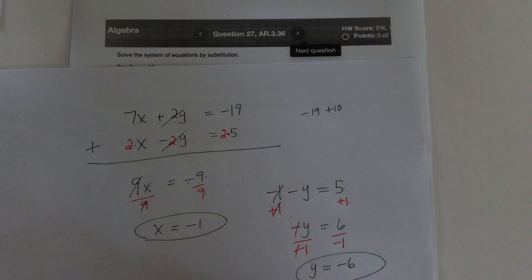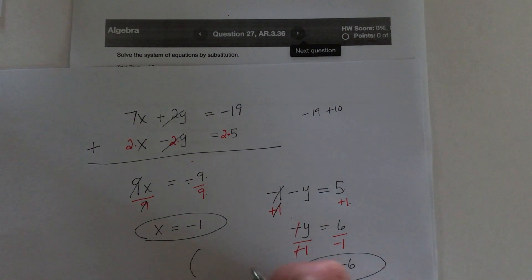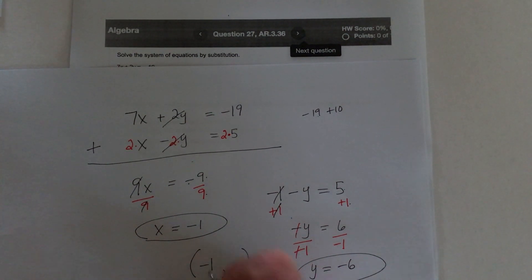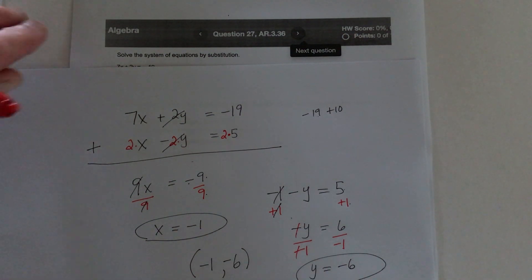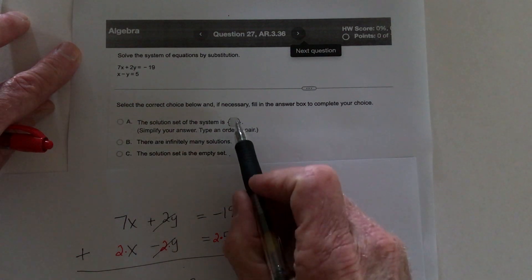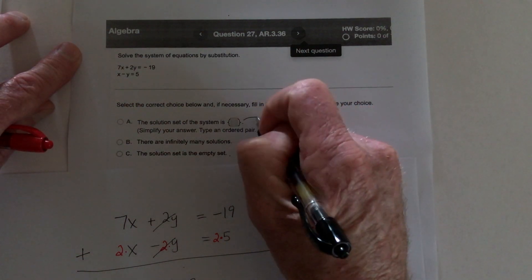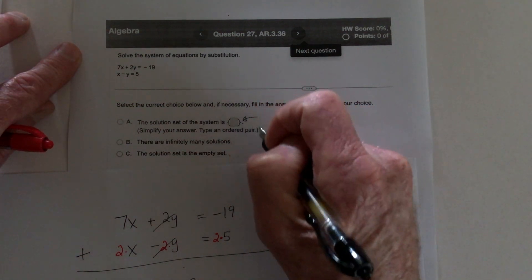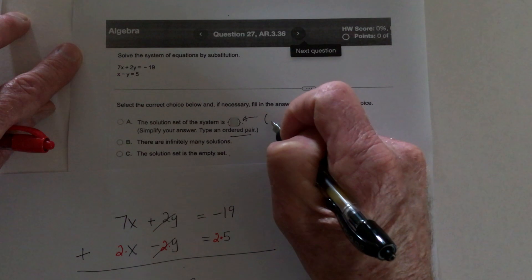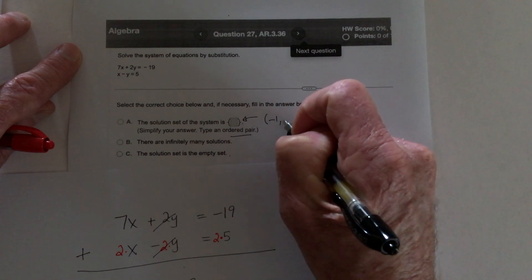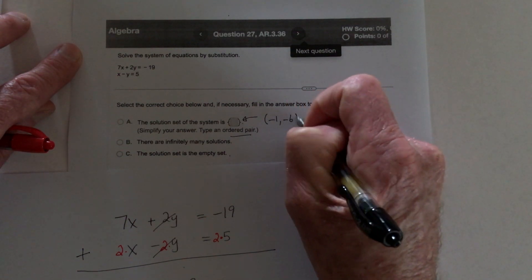And then they're probably going to ask you to put the answer as an ordered pair — x first and y second. So you put parentheses: negative 1 goes first, negative 6 goes second. That's what they're asking for right there, so make sure you put the ordered pair.